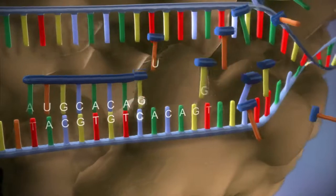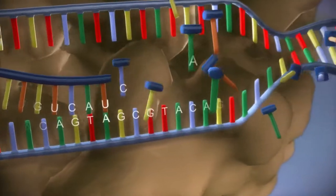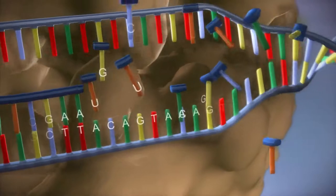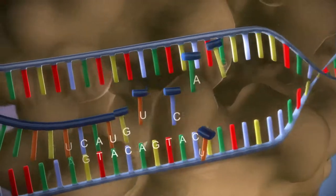The DNA code determines the order in which the free bases are added to the messenger RNA. This process is called transcription.